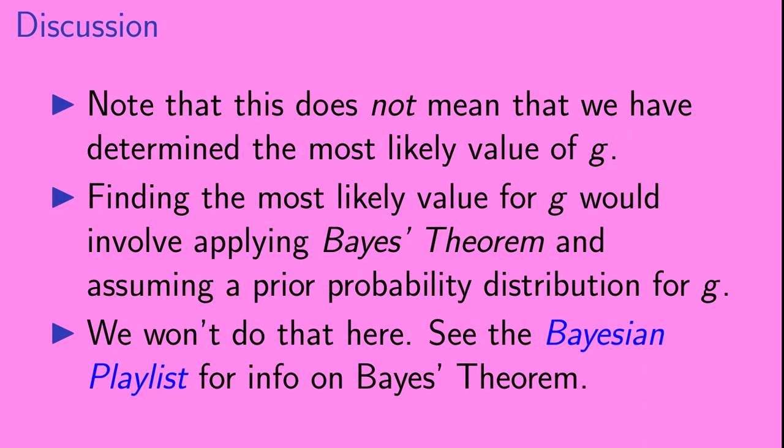Now, it's important to know that this does not mean that we have determined the most likely value of g. Finding the most likely value for g would involve applying Bayes' theorem and assuming a prior probability distribution for g. We're not going to do that here, but if you're interested, you can see the Bayesian playlist for information on Bayes' theorem.